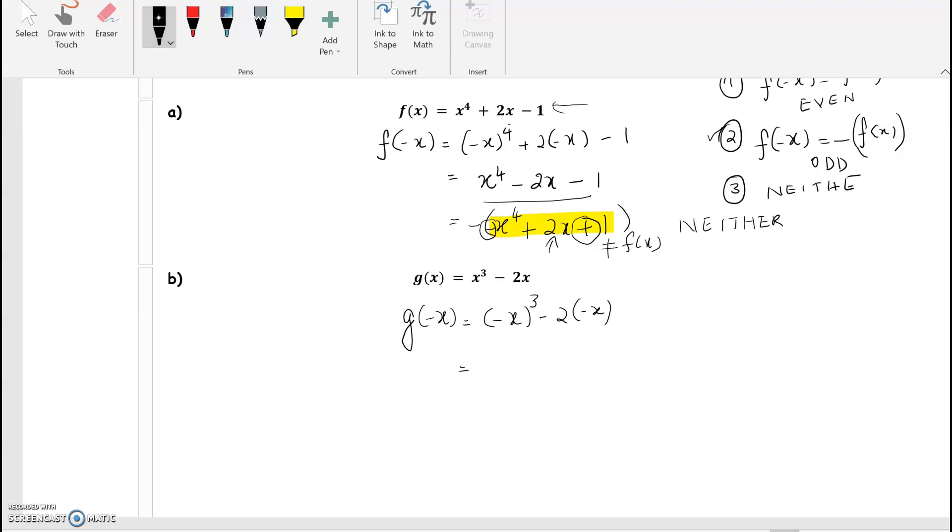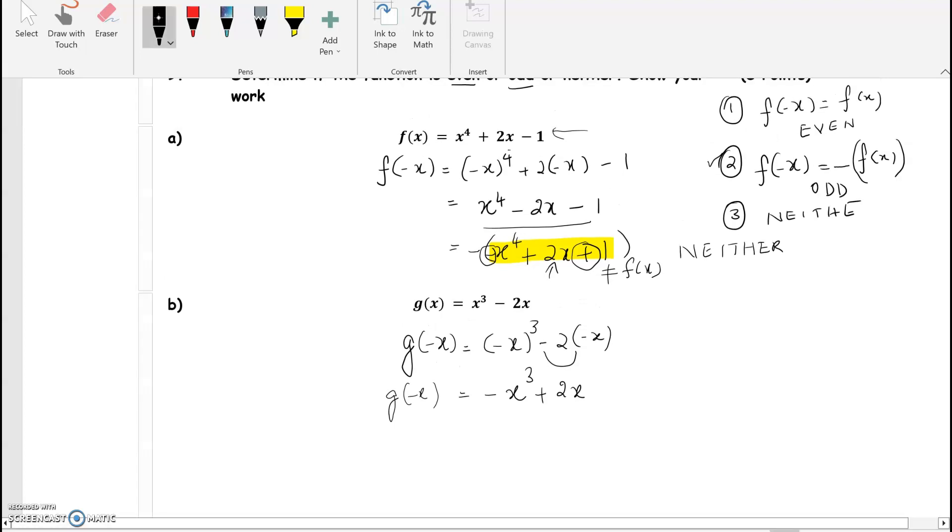So this is equal to negative x cubed, minus times minus is plus 2x. So g of negative x is equal to negative x cubed plus 2x. It's definitely not even because the function has changed.